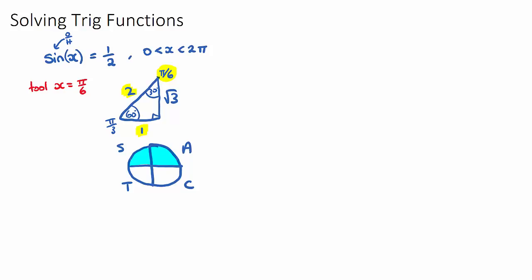So our answers within our domain, which is 1 full circle, because this is 0, π/2, π, 3π/2, 2π, will be π/6 up in either of these two quadrants.